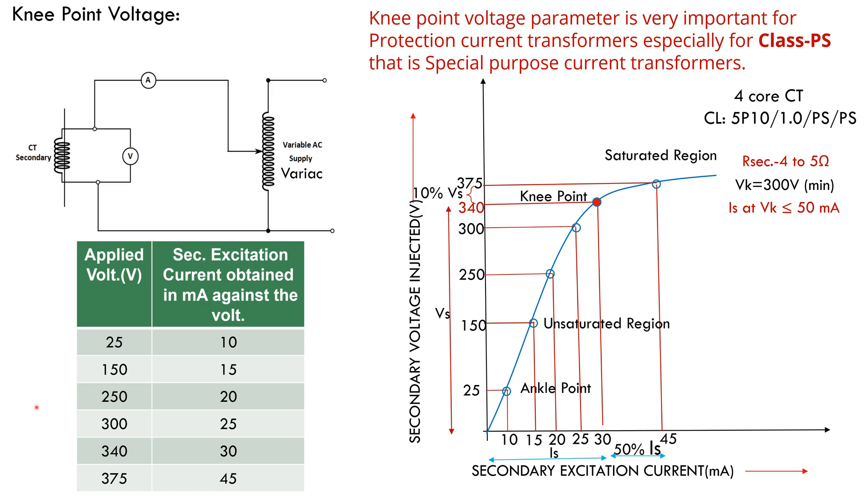If we recall the definition of knee point voltage, the value of voltage at which when the voltage applied is increased by 10% causes the exciting current to increase by 50%. At 375 volt applied voltage, the current rises abruptly to the value of 45 milliampere.